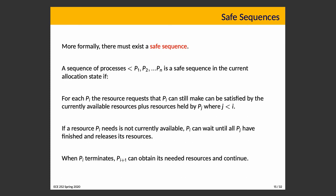More formally, a state is safe if there exists a safe sequence — a sequence of processes P1, P2, ..., PN such that for each process Pi, the resource requests it can still make can be satisfied with the currently available resources plus resources held by processes that have already terminated ahead of it in the sequence. We look at the state of the world right now, check if there is any process that can run to completion, pretend it runs to completion and releases its resources, add those to the pool, and then check if any other process can now complete.